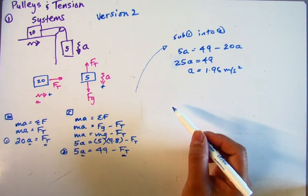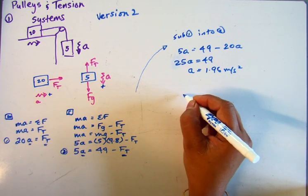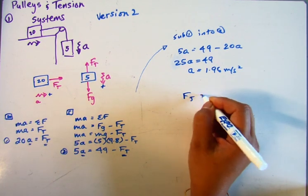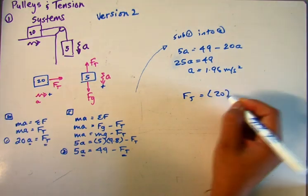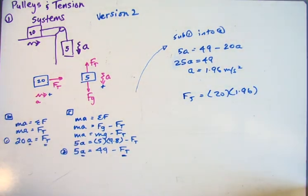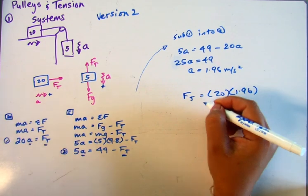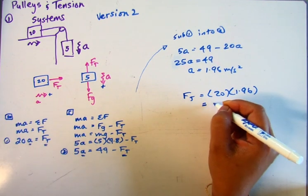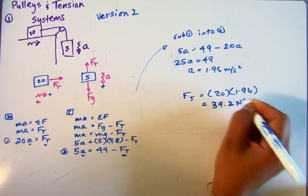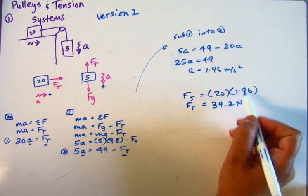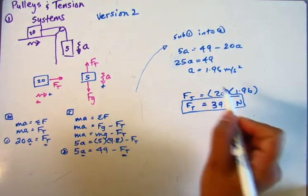Now I can take that and plug it back into the original equation 1 and get Ft equals 20 times 1.96. And our answer is 39.2. So my tension force is 39.2 Newtons. So that's the second way you could solve this problem. Thank you.